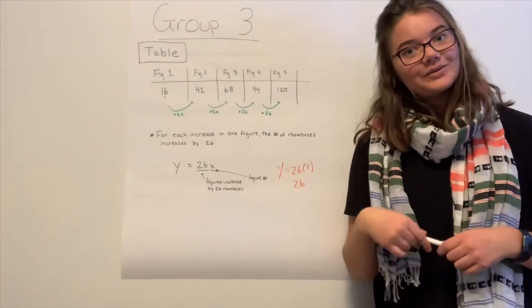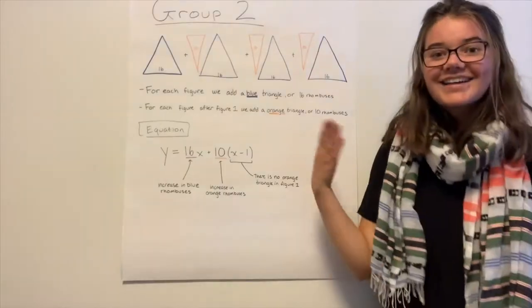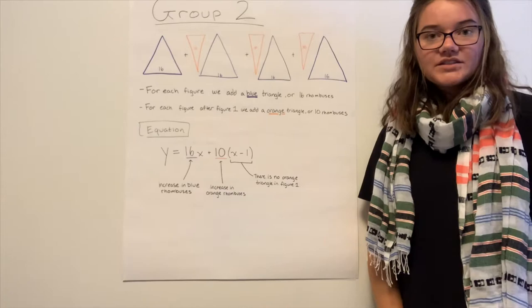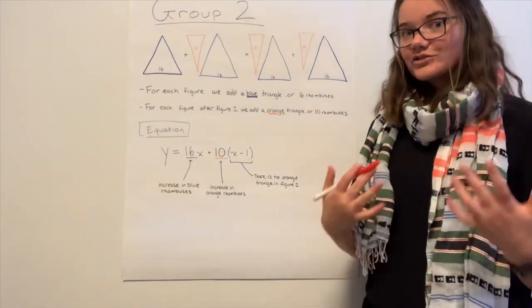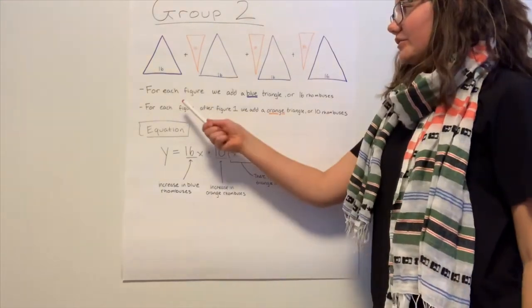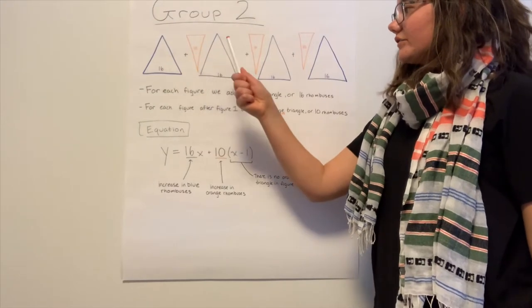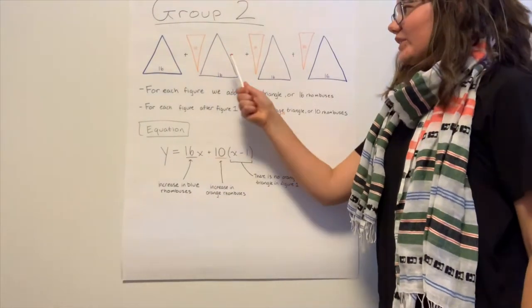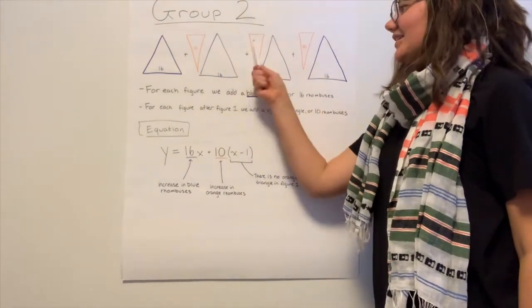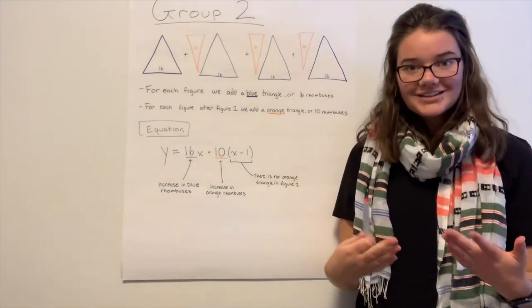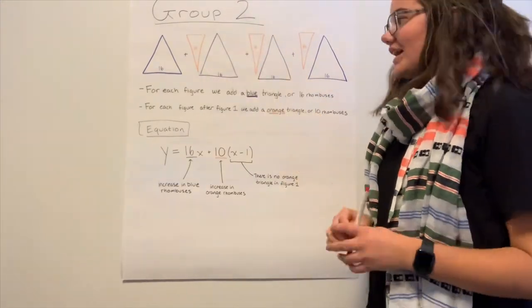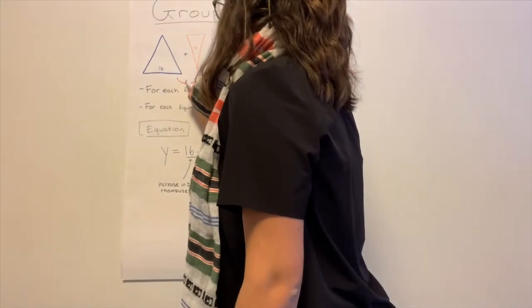So with that, I would get the second group up here. Tell me about your pattern and how you came up with your generalization. And so this group is looking at it more from structural points. So we noticed, for every time the figure increased, we add an orange triangle of rhombuses and a blue triangle of rhombuses. So the blue has 16 and orange has 10. So every time we're adding a 16 and 16 and 16 and a 10 and a 10 and a 10. So they're still getting at this repeated addition idea, which is great. Still seeing that 26 as we did in the last group, right? We're adding 26 every single time.